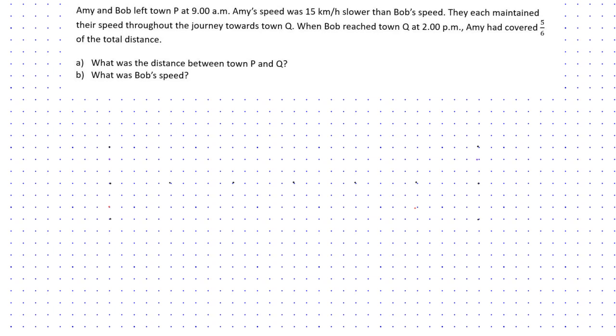Hi, so this question is based on speed. It says Amy and Bob left town P at 9am. Amy's speed was 15 km per hour slower than Bob's speed. They each maintained their speed throughout the journey towards town Q. When Bob reached town Q at 2pm, Amy had covered 5 out of 6 of the total distance. So question A is, what was the distance between town P and Q?